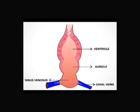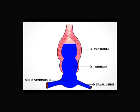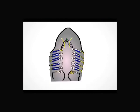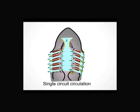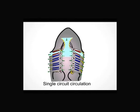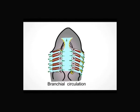In primitive vertebrates like fishes, blood is sent from the heart to the respiratory parts and then to the body parts. Blood enters the heart only once per complete circuit, hence it is called single circuit circulation. Since gills are used for oxygenation of blood, it is referred to as branchial circulation.